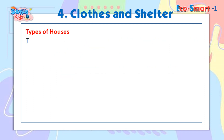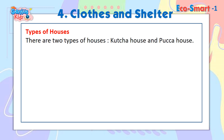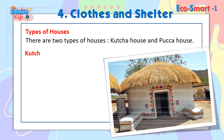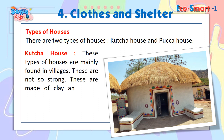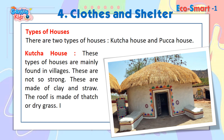Types of houses. There are two types of houses: Kaccha house and Paka house. Kaccha houses are mainly found in villages. These are not so strong. They are made of clay and straw. The roof is made of thatch or dry grass. A Kaccha house is also called a hut.